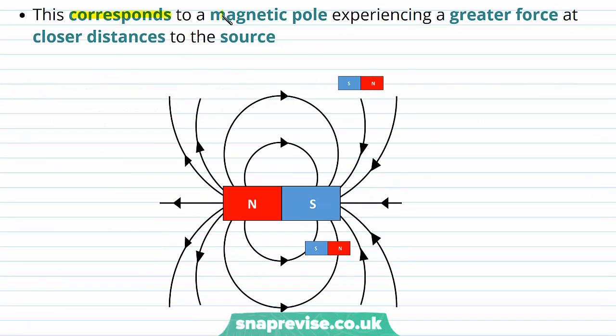This corresponds to a magnetic pole experiencing a greater force at closer distances to the source. So here we have a big bar magnet in the centre and for this magnet here, which is separated by quite a large distance from the source, we see that the force on this magnet, which we are going to call F1, is fairly small.